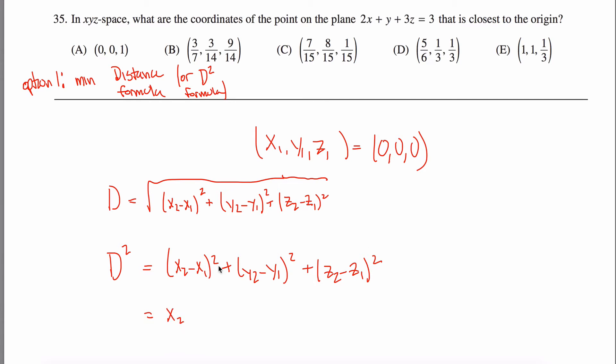So really, it's just x2 minus 0 squared plus y2 minus 0 squared plus z2 minus 0 squared. And since I only have, I don't need to subscript them all with a 2, maybe I could write it like this.